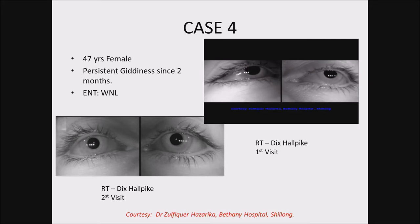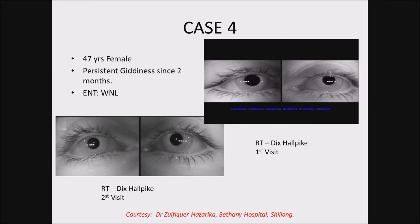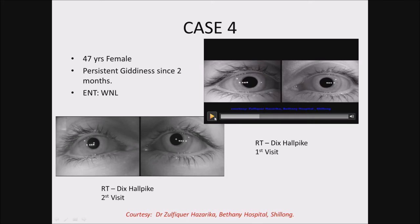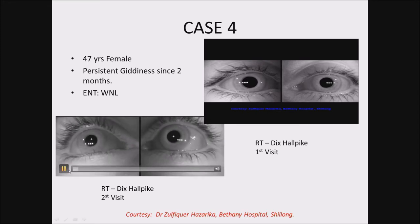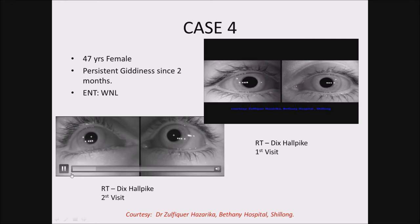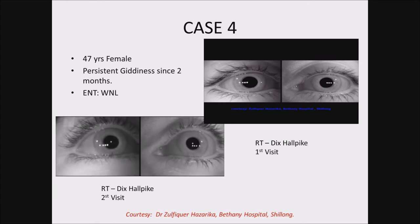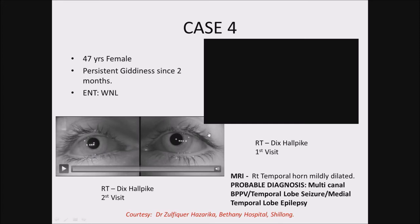I would like to get more input from the experts here — on Dix-Hallpike you get a nice torsional nystagmus suggesting posterior canal involvement, and then suddenly after a few seconds she goes on to develop a purely downbeating nystagmus. On follow-up after a couple of weeks, Dix-Hallpike showed improvement but she still had giddiness, and repeated Dix-Hallpike still showed persisting downbeating nystagmus, though of lower intensity compared to the first test. MRI showed right temporal horn dilatation.